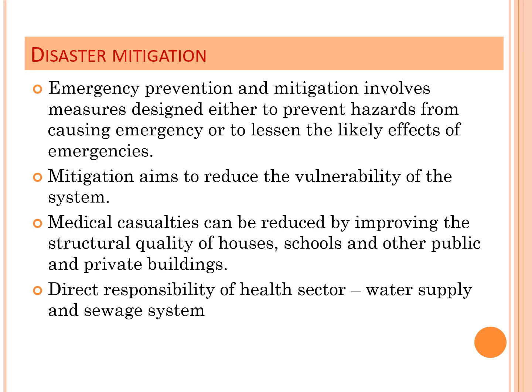Disaster mitigation — before the disaster occurs — involves prevention. Emergency prevention and mitigation involves measures designed either to prevent hazards from causing emergencies or to lessen their likely effects. Disaster mitigation and preparedness go hand in hand. Vulnerable areas must be identified — for example, areas near dams prone to flooding — and people must be educated with proper guidelines and strategic plans, including warning signals, and the government should take action to shift communities as needed.